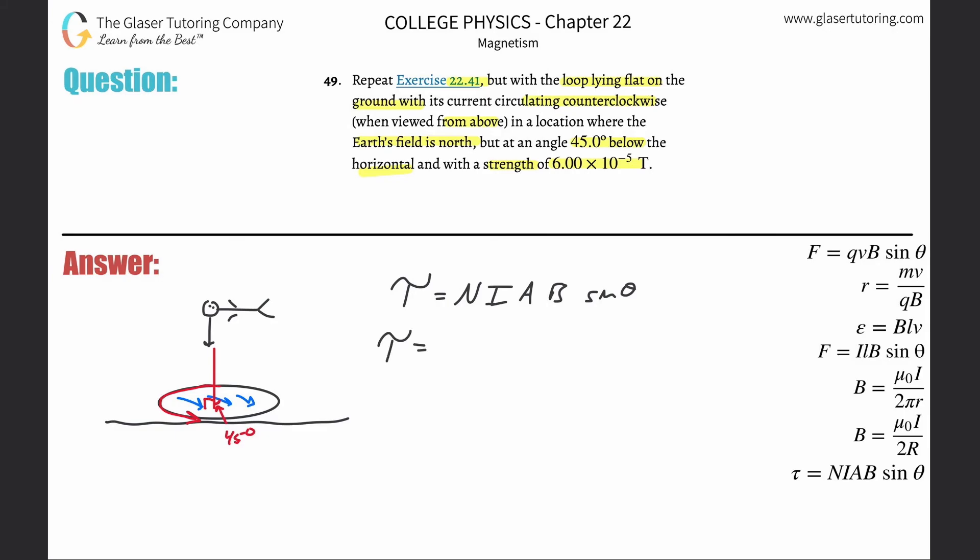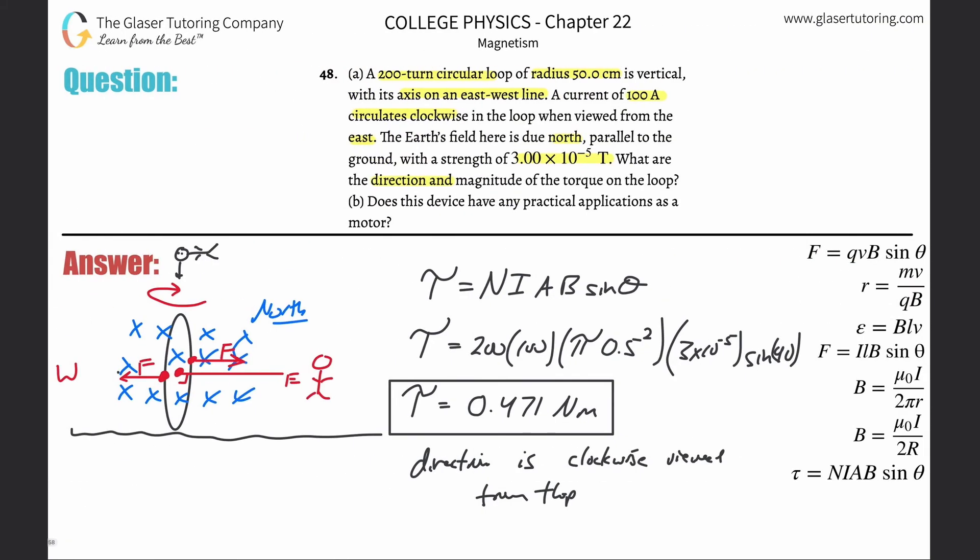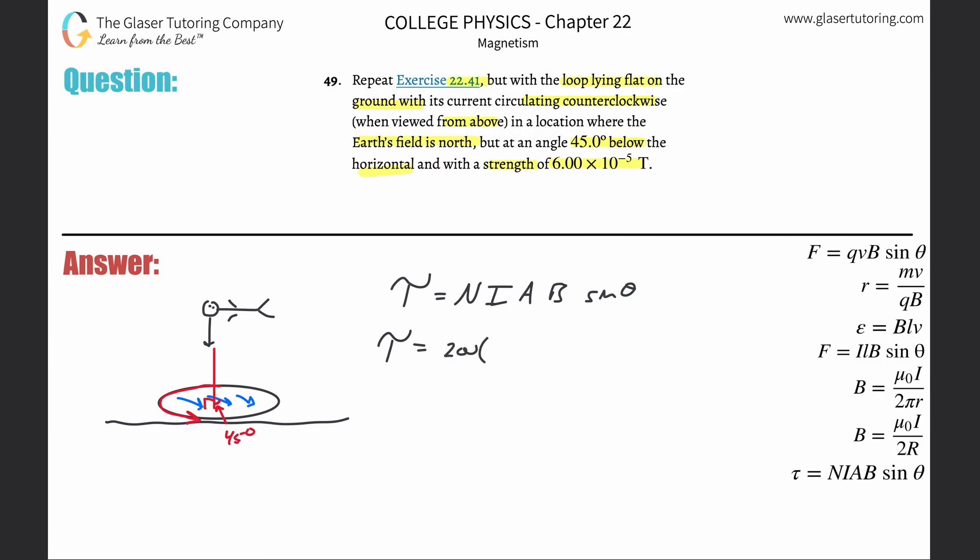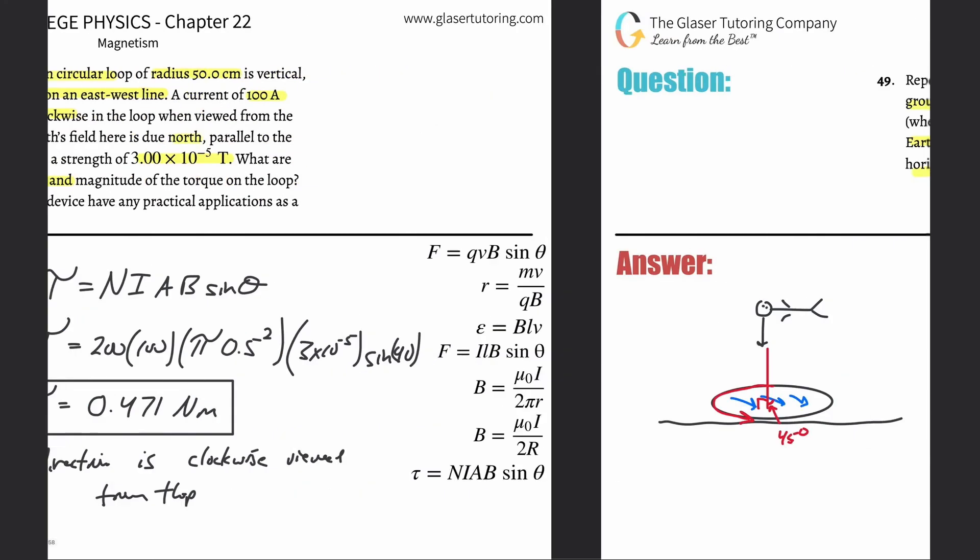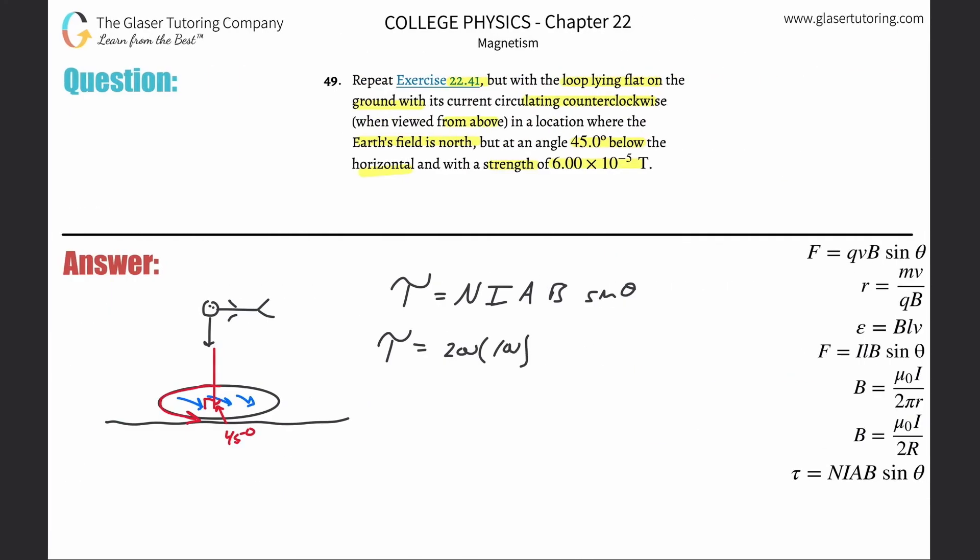From the prior problem, n is 200 turns, the current is 100, the area is pi r squared and that was 0.5 squared. The magnetic field strength changed, so now it's going to be 6 times 10 to the minus fifth, and then the sine of 45 degrees.